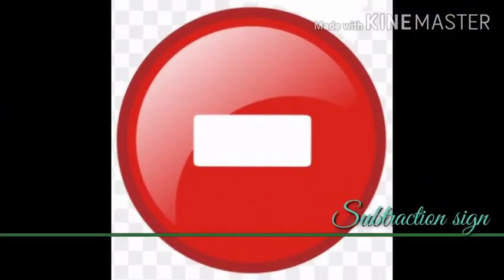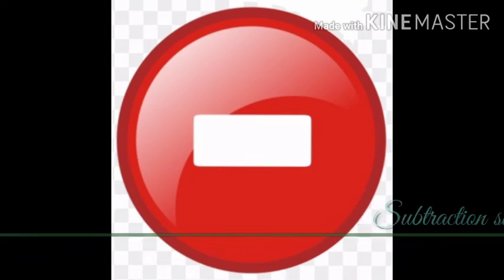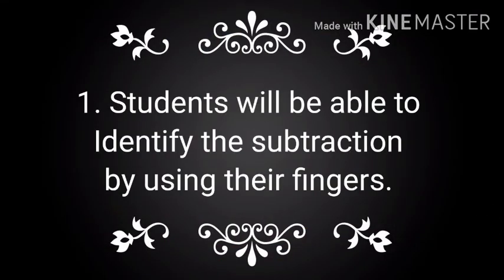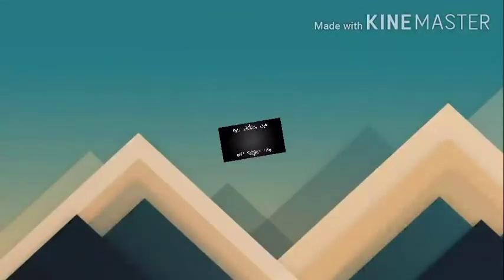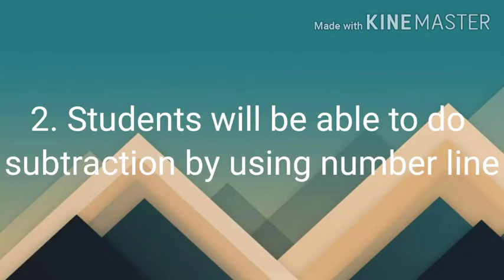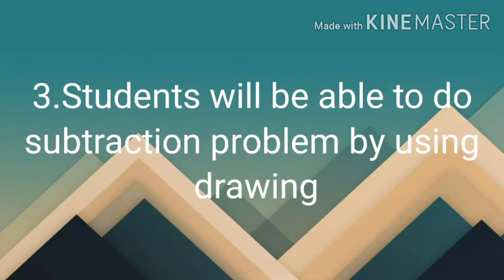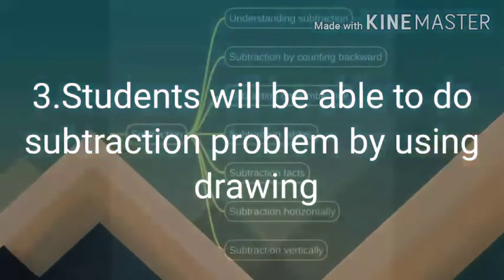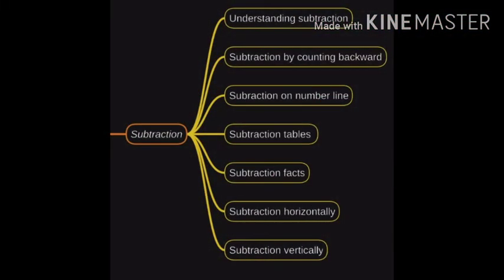Students, what is this? This is a subtraction sign. Now I will tell you what are the objectives of subtraction. First, students will be able to identify the subtraction by using their fingers. Second, students will be able to do subtraction by using a number line. Third, students will be able to do subtraction problems by using drawing. Now let's start to discuss our first part of subtraction, that is understanding subtraction.